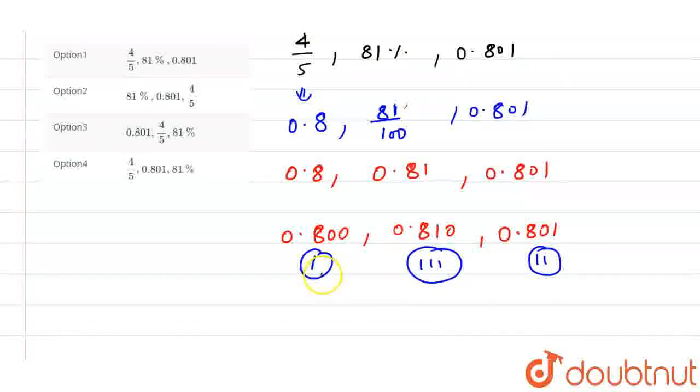So the smallest value itself will be 4/5, which equals 0.800. Then comes 0.801, and then 81%, which is 0.810. If we look at the options, the smallest is 4/5, then 0.801, and then 81 percent. This means our option number 4 is correct.